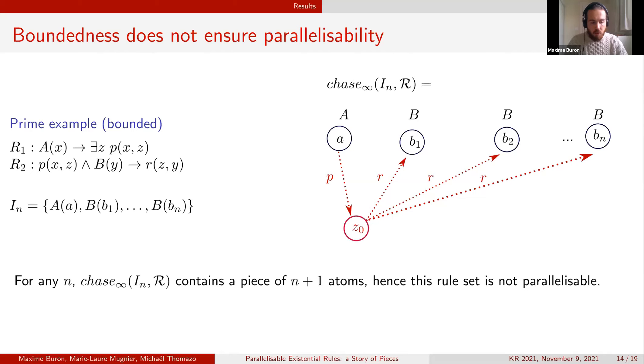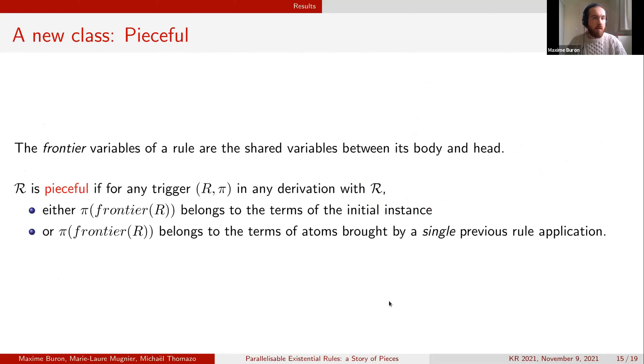Here we have one piece which can be of arbitrary size according to the instance. Since this chase creates an arbitrary large piece, it cannot be simulated by a single breadth-first step. Indeed a single breadth-first step can only produce a piece that is as large as the rule's head.